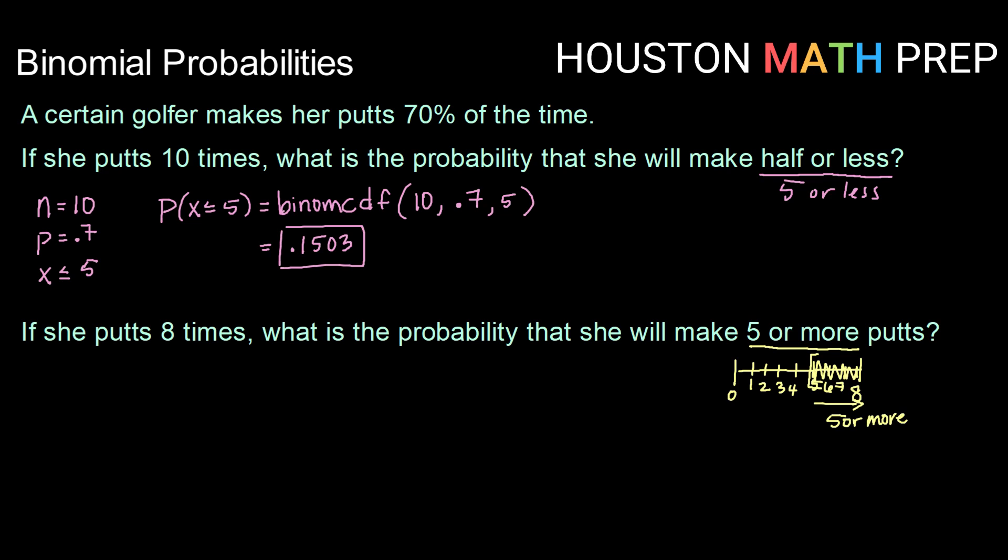Now, we could find the probability of her making 5 putts, 6 putts, 7 putts, and 8 putts and add them up. But we have already said that would be tedious. So we'd like to figure out how we could use our CDF, our cumulative distribution function, to help us out here.